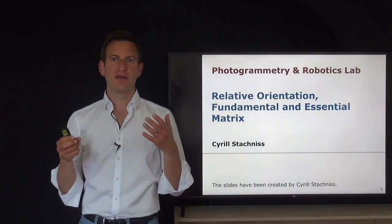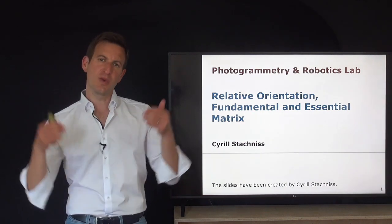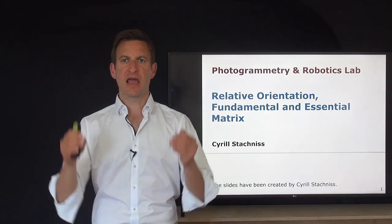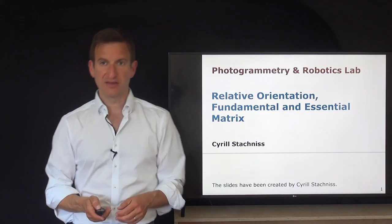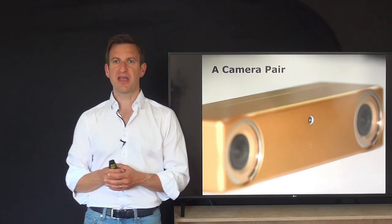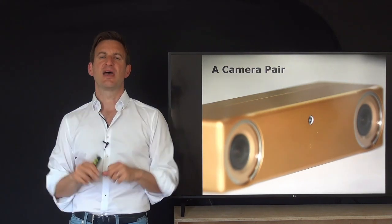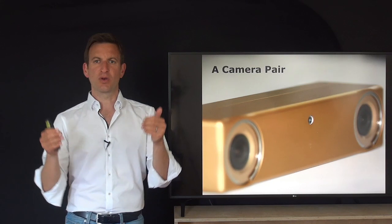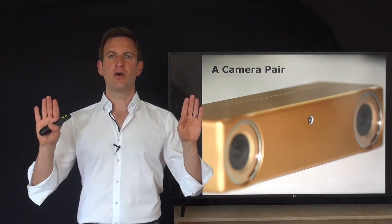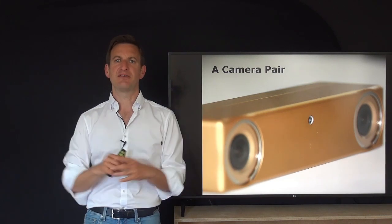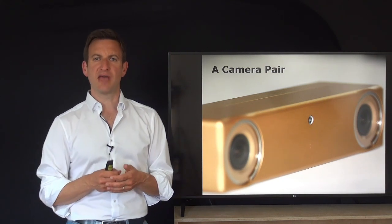Hello. I want to talk today about the relative orientation of the camera pair, the fundamental matrix, and the essential matrix. We are now moving on from using a single camera to using two cameras. This is an example of a camera pair — a standard stereo camera with two physical cameras rigidly attached to each other, taking images at the same point in time. This is an example of the stereo normal case where both cameras look in the same direction with just an offset along one direction.